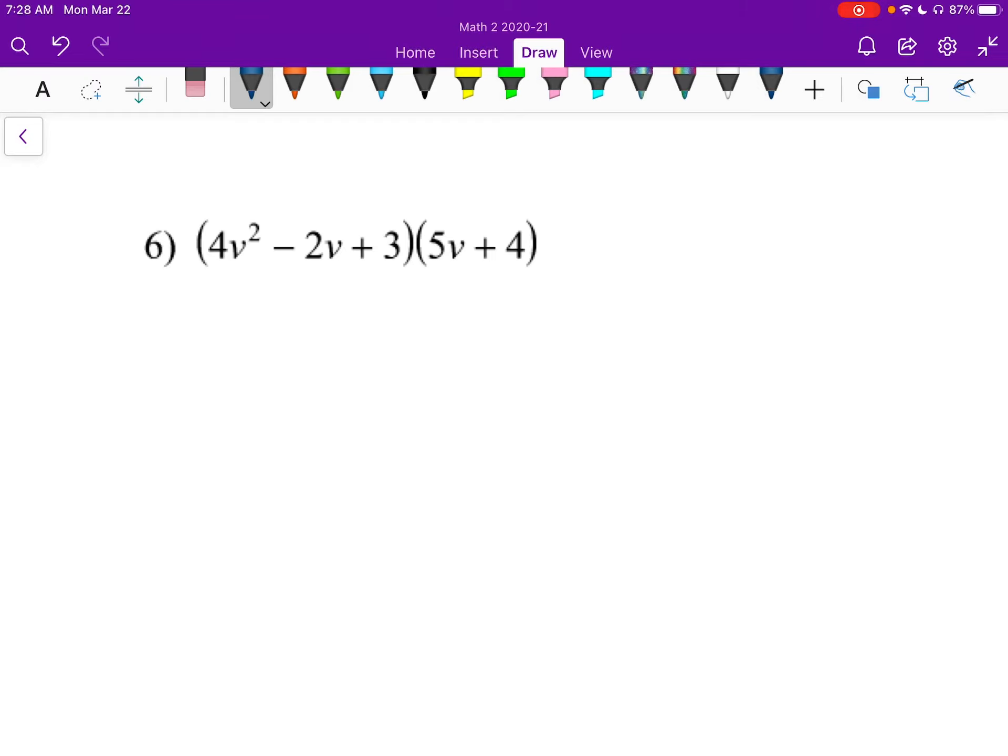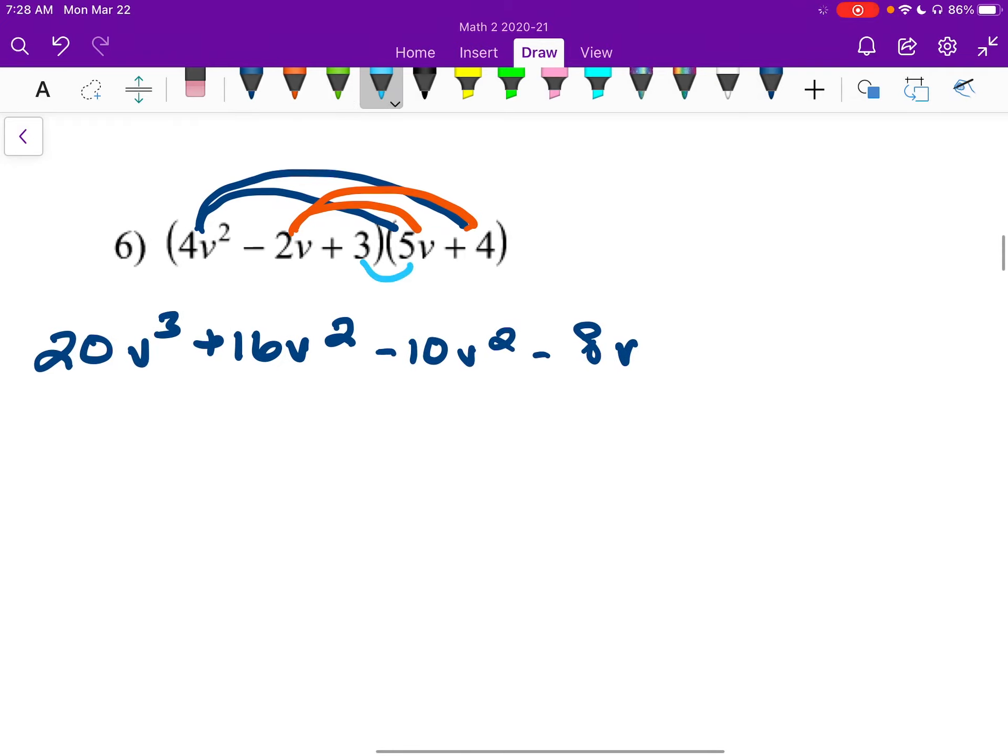So I take my 4v squared first and distribute it both to the 5v and to the 4. So this will be 20v cubed, right, to the 3, because I have a v squared and a v, plus 16v squared. Next up, I have the middle piece. So then that'll be negative 10v squared minus 8v. And lastly, we have the 3, which gives us a 15v and a 12.